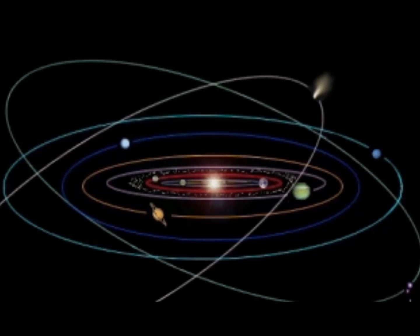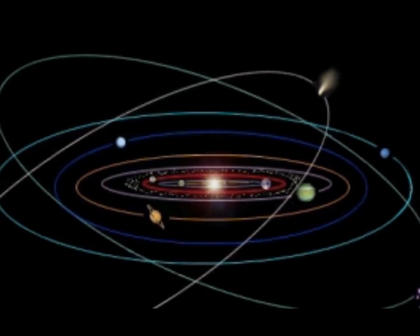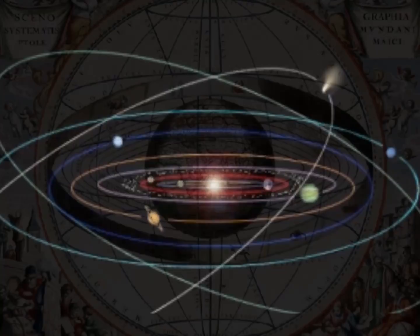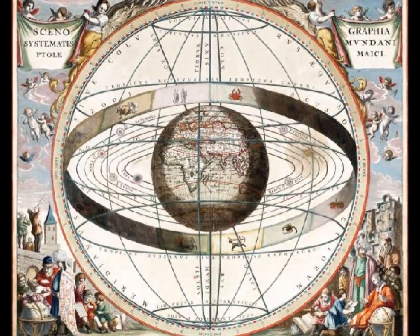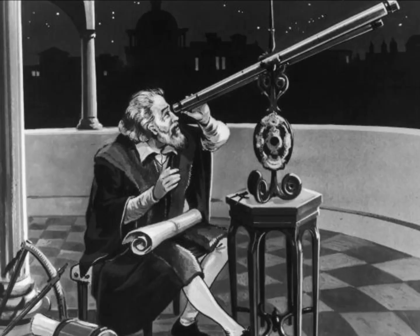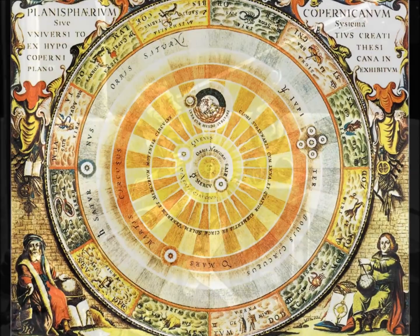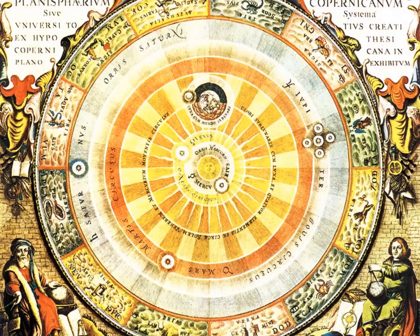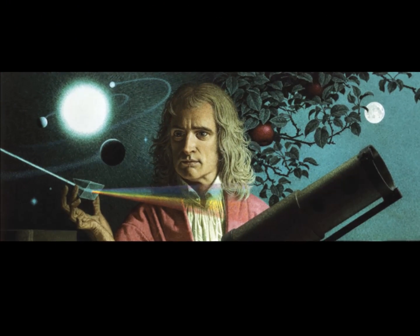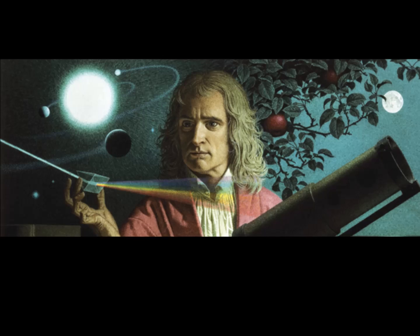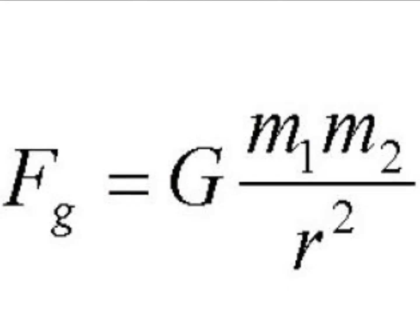The study and understanding of our solar system has developed and evolved over thousands of years with many historical advancements. The Earth-centered perspective of ancient astronomers eventually gave way to the Sun-centered perspective of the Renaissance. During the Industrial Age, advances in mathematics and science emphasized gravity's crucial role in solar system motions and structure.